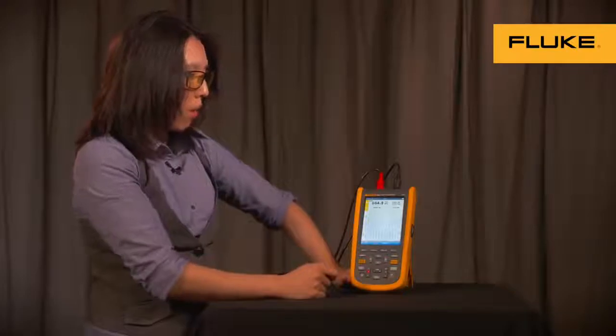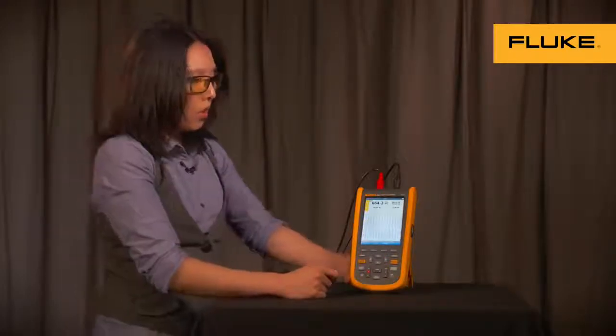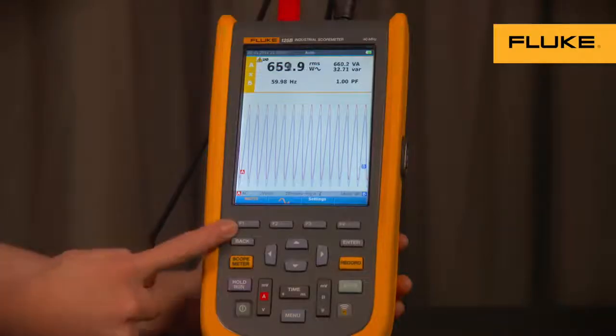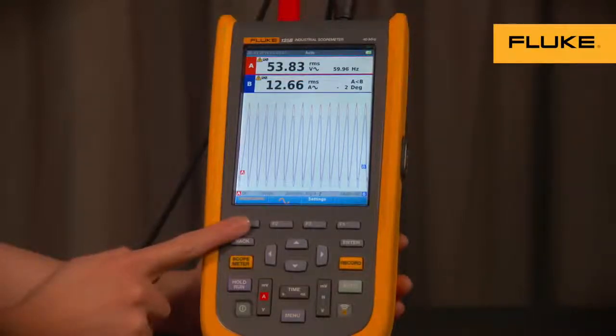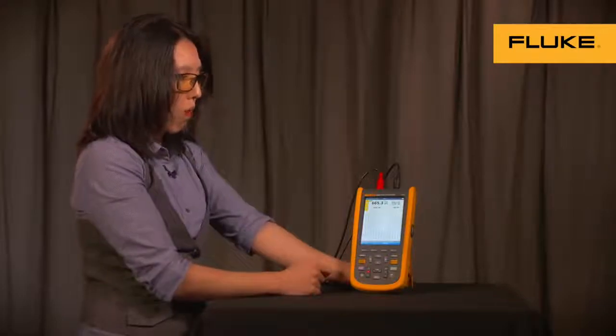Now let's toggle to, by pressing F2, the waveform. You notice here, you may choose watts by toggling F1 or volts amps by pressing F1. So let's toggle back to watts.